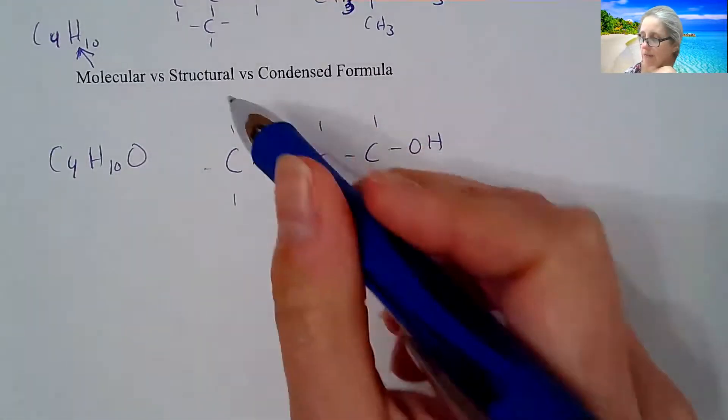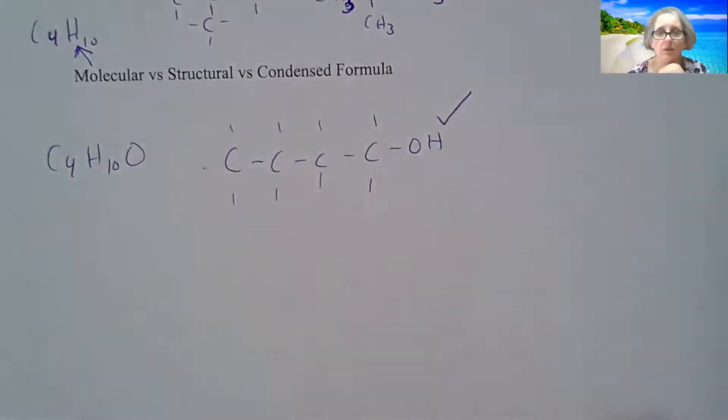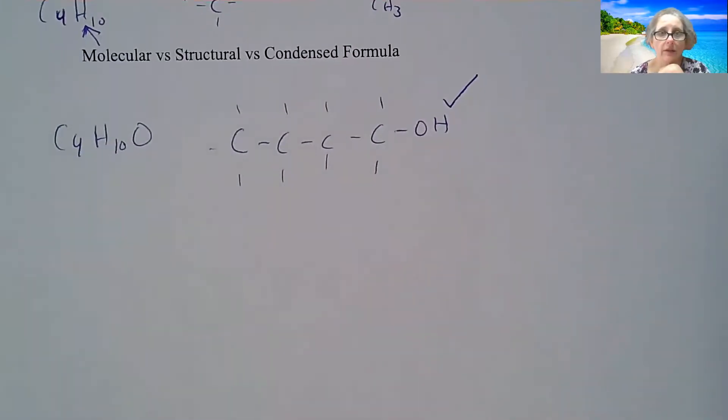So let's say I draw it as an alcohol. Well, if I draw it as an alcohol, the O has to have an H attached to it. And then I need to count my hydrogens. One, two, three, four, five, six, seven, eight, nine, ten. So this could be a legitimate structure for that molecular formula.